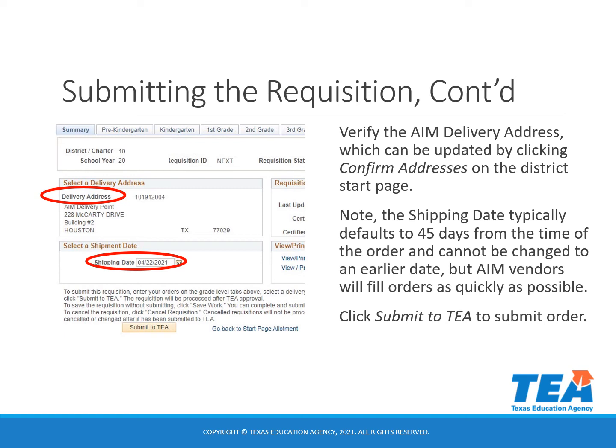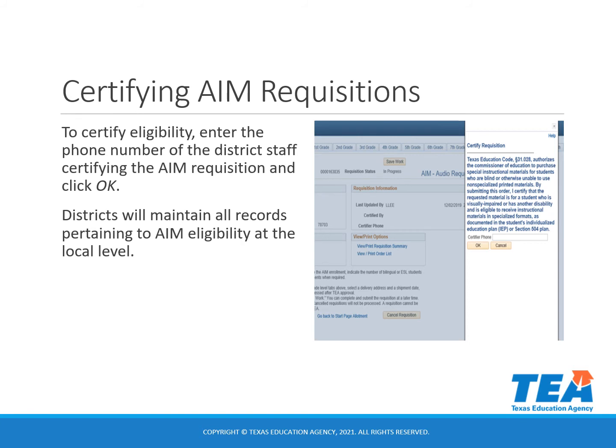When you verify this information, you'll click 'Submit to TEA' to submit the order. Before submitting the requisition, you will be asked to read a statement and certify that the order is for a qualifying student. To certify eligibility, you'll enter the phone number of the district staff certifying the AIM requisition and click OK. Please do not send any confidential student information to TEA — maintain all of those records at the district level.